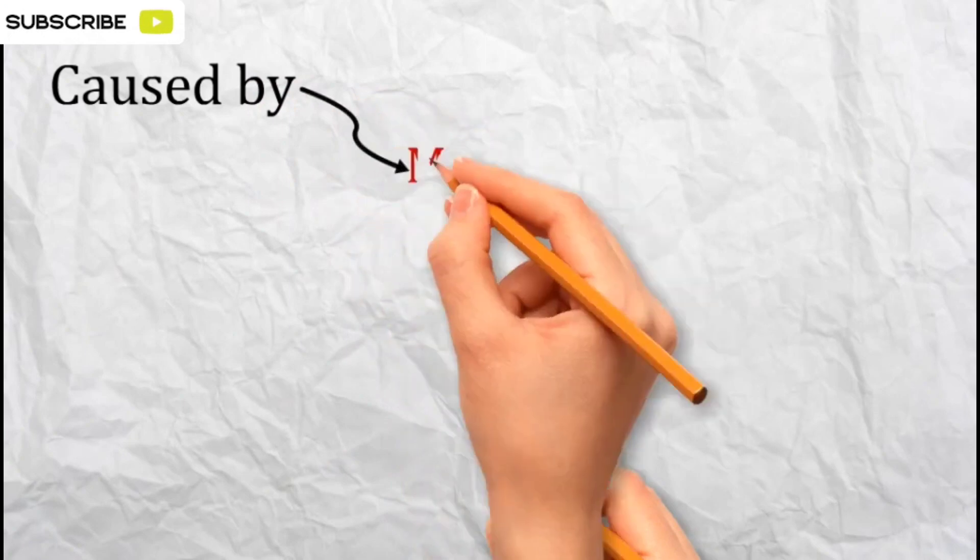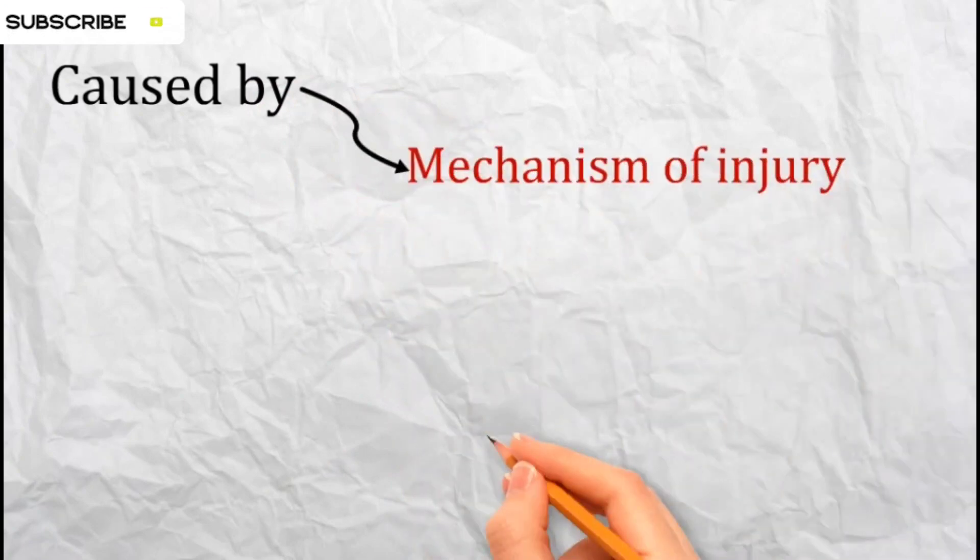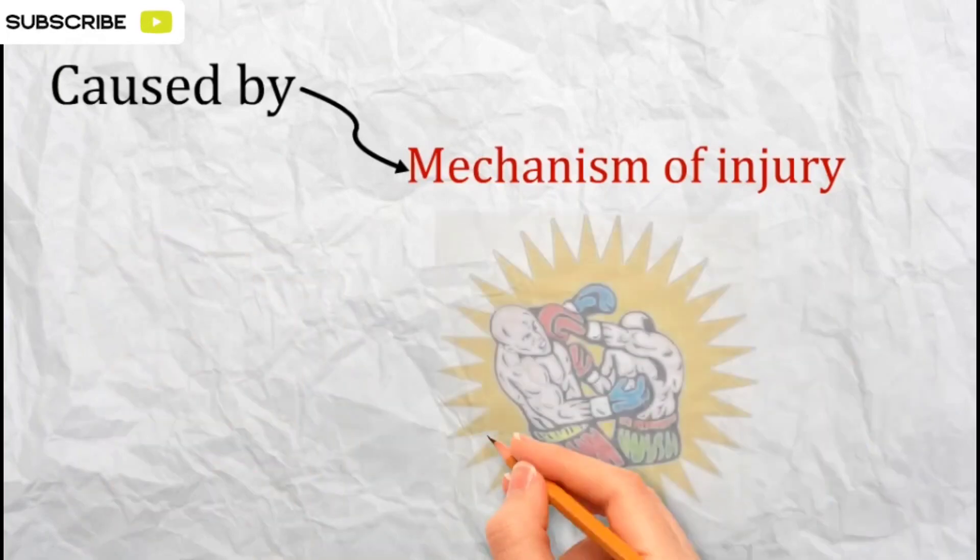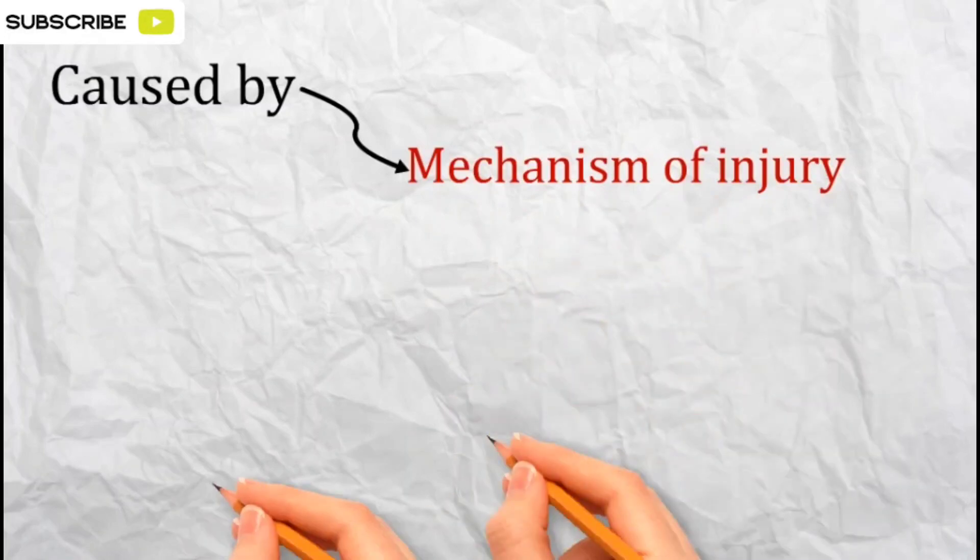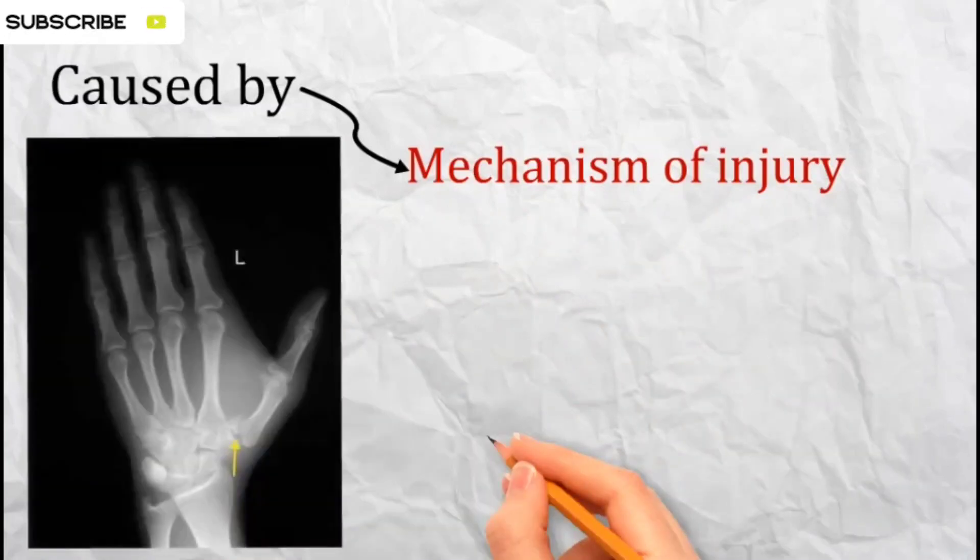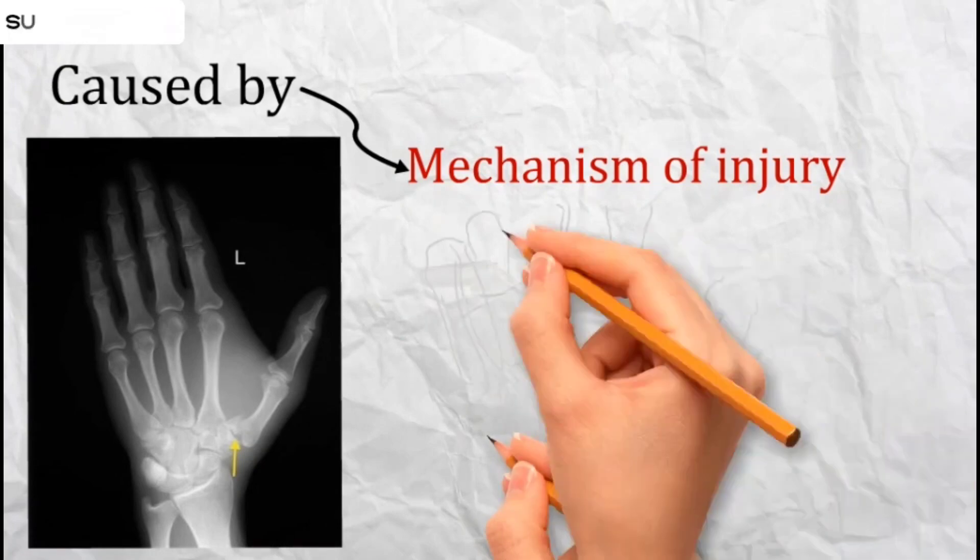The mechanism of injury typically involves an axial loading of the partially flexed thumb metacarpal, such as delivering a punch with a clenched fist. When this happens, the thumb metacarpal bone can break, leading to a subluxation of the carpometacarpal joint.